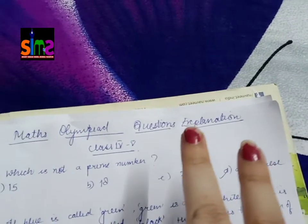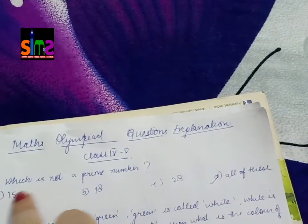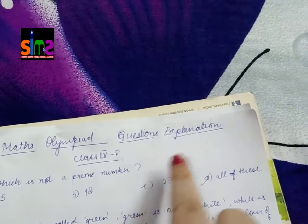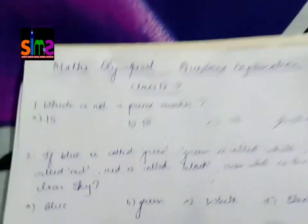If all have only two factors, one and the number itself, then you click it. But here there are three composite numbers, not prime numbers. That means all of these is the answer.